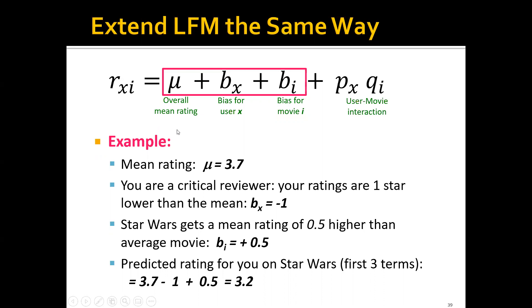Plus the user bias, bx, plus the movie bias, bi. And finally, we have the same old user movie interaction term. This is the inner product between the user latent factors and the item latent factors.